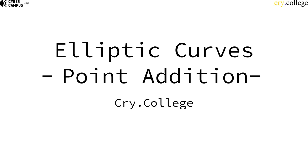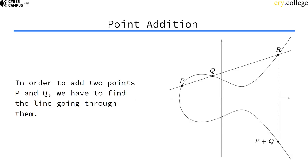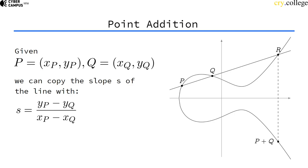So let's see how point addition actually works on an equation level. We want to add two points. For that we have to find a line that goes through both of those points. We can do that by first calculating the slope of this line, the German Steigung.